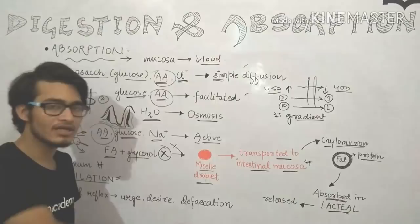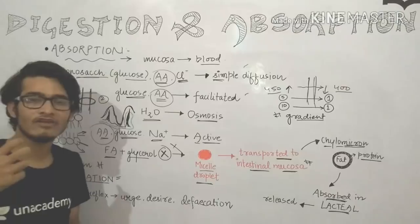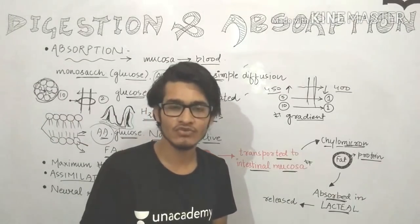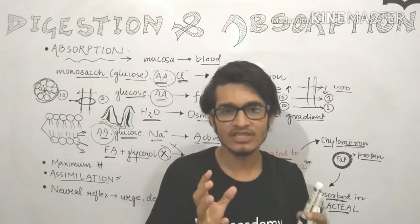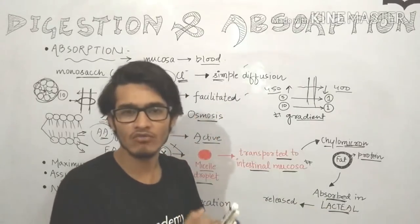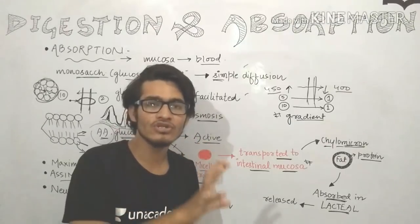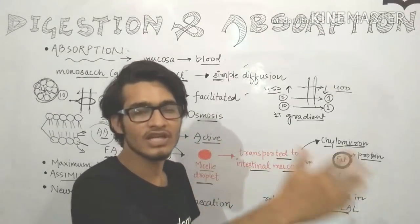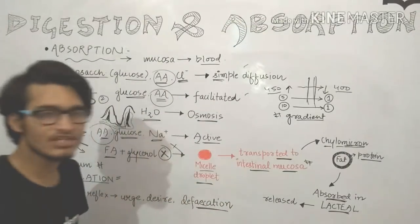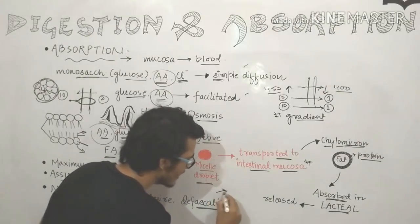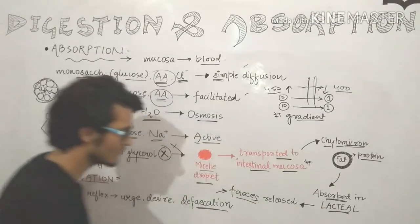Neural reflexes give us the urge to release the stored food outside the body. Through mass peristalsis — contraction of the intestinal walls — the food present in the rectum is pushed out through the anus. This process is known as defecation, since the undigested or unabsorbed food is known as feces.